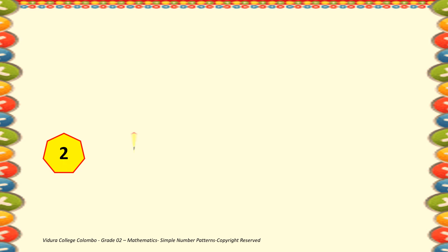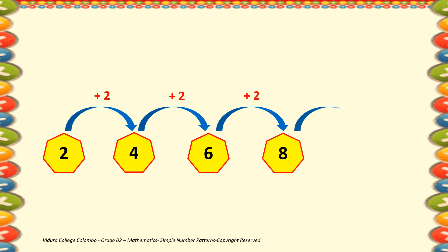Third one. 2, 4. The gap in between two numbers is 2. 4 plus 2 is 6. 6 plus 2 is 8. 8 plus 2 is 10. Now you can see the gap is shown in red color. The gap in between two numbers is 2.